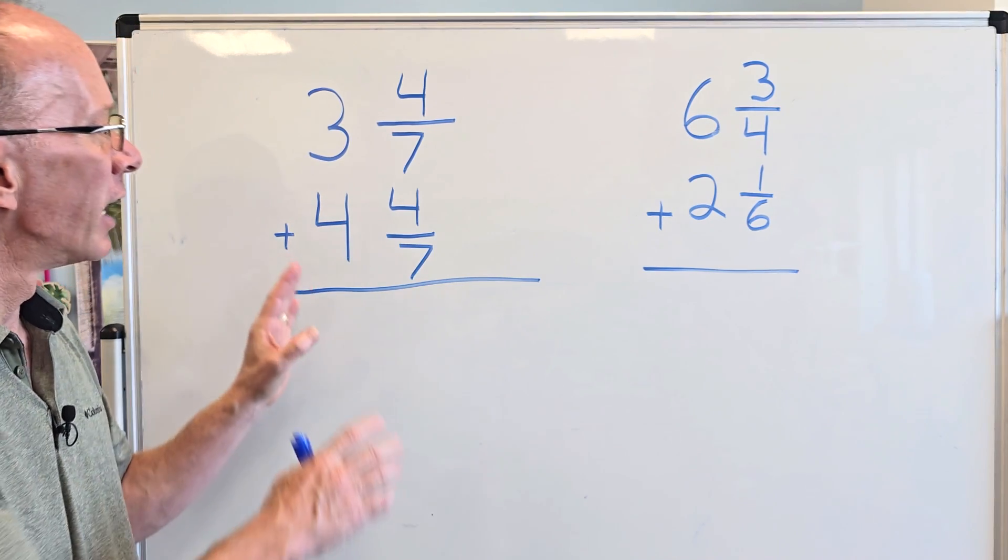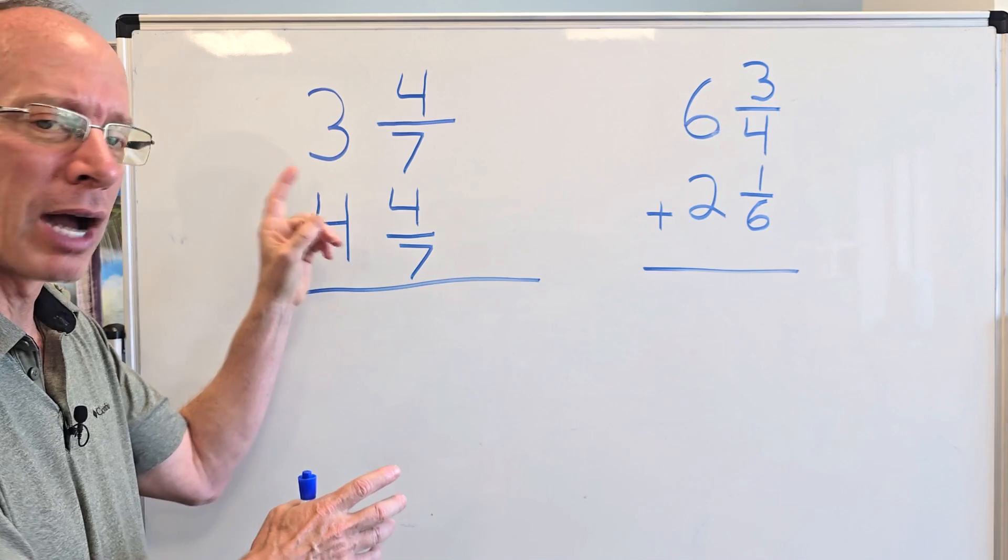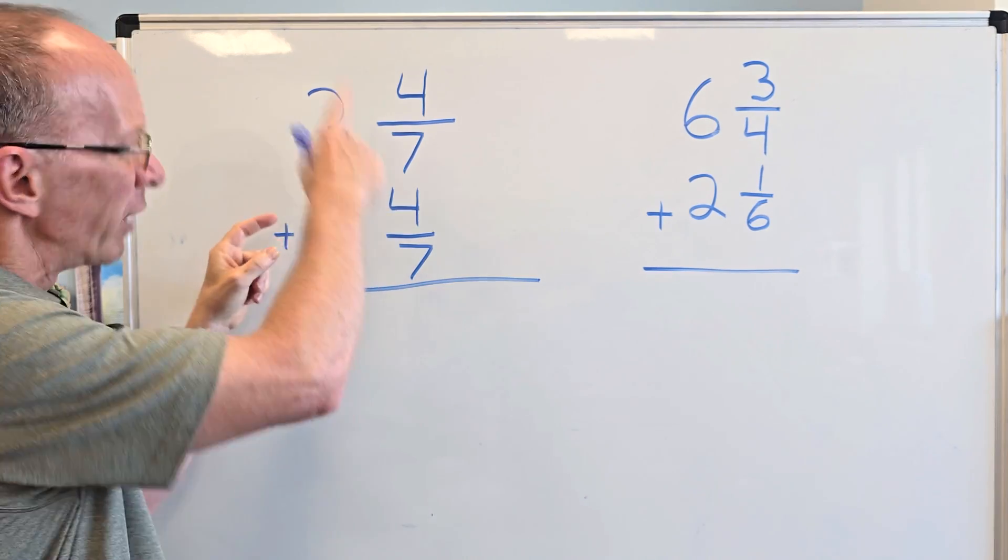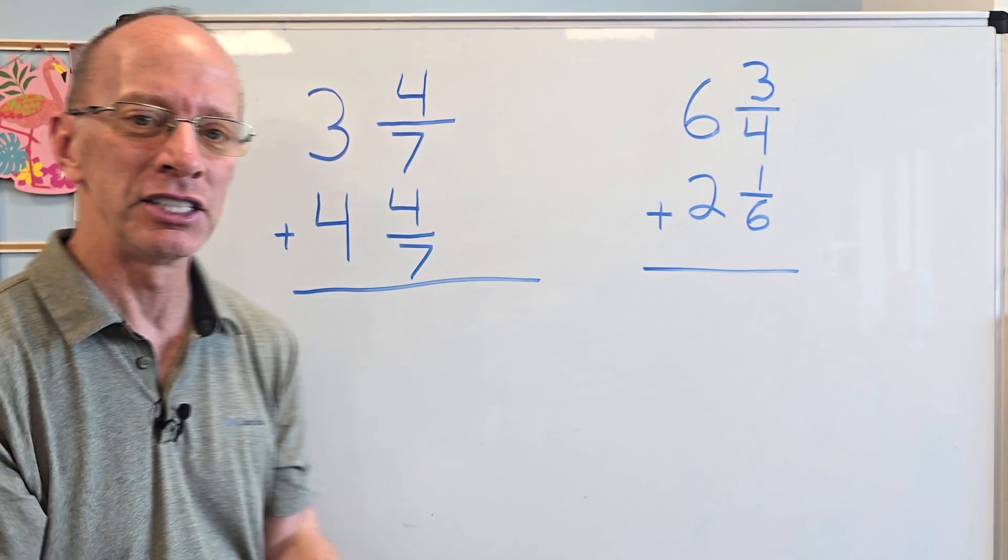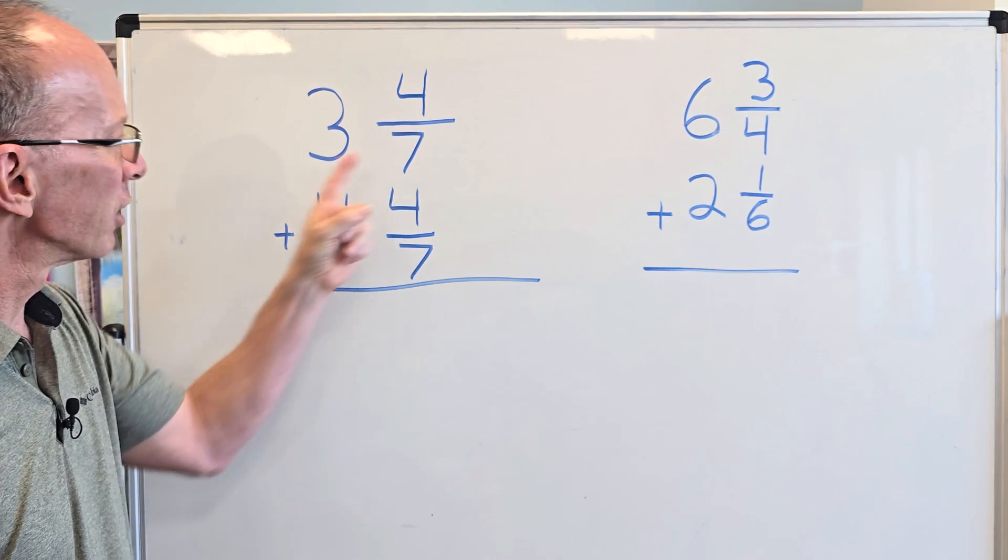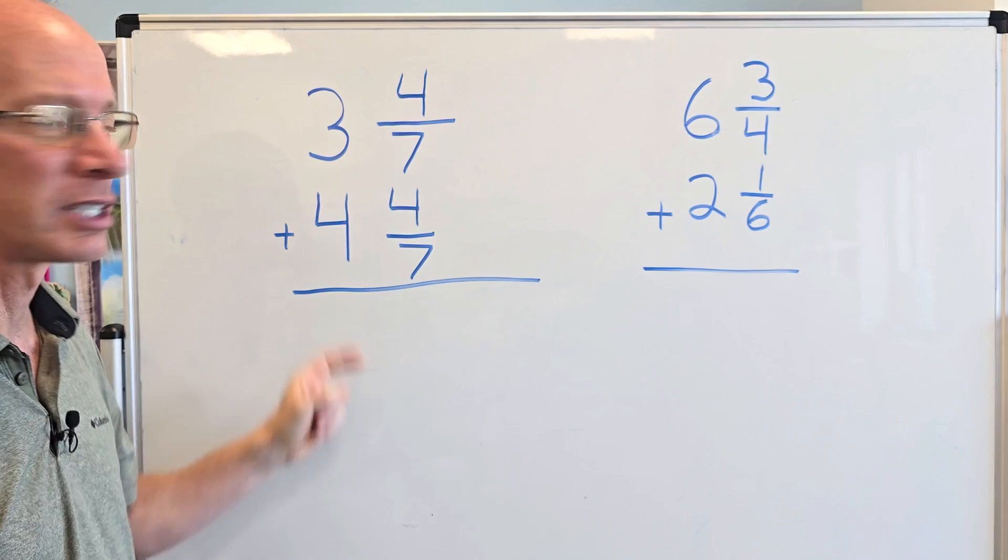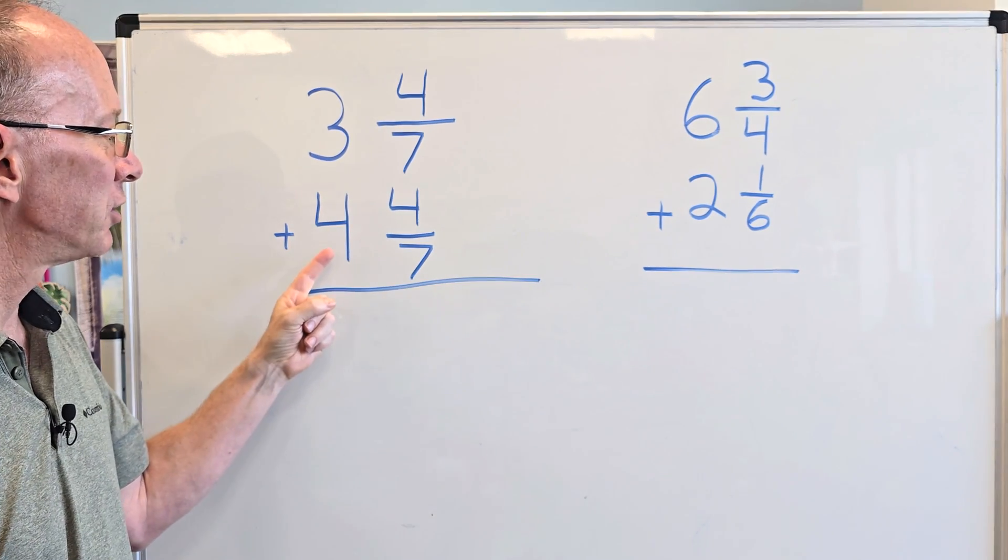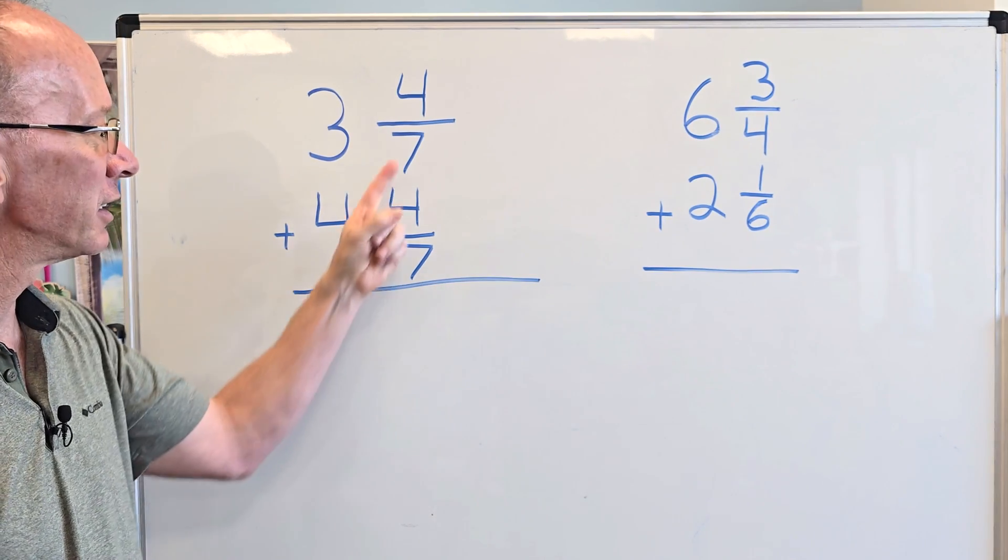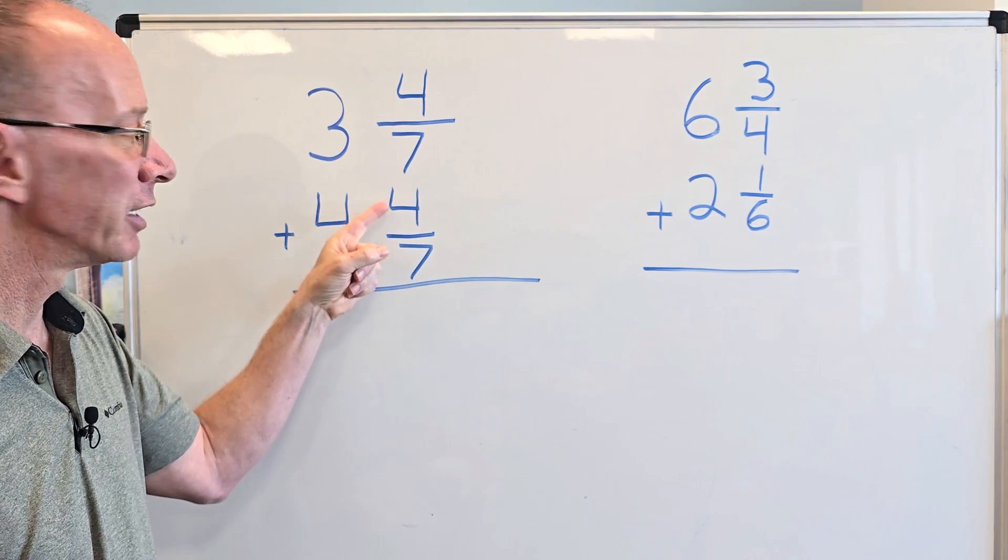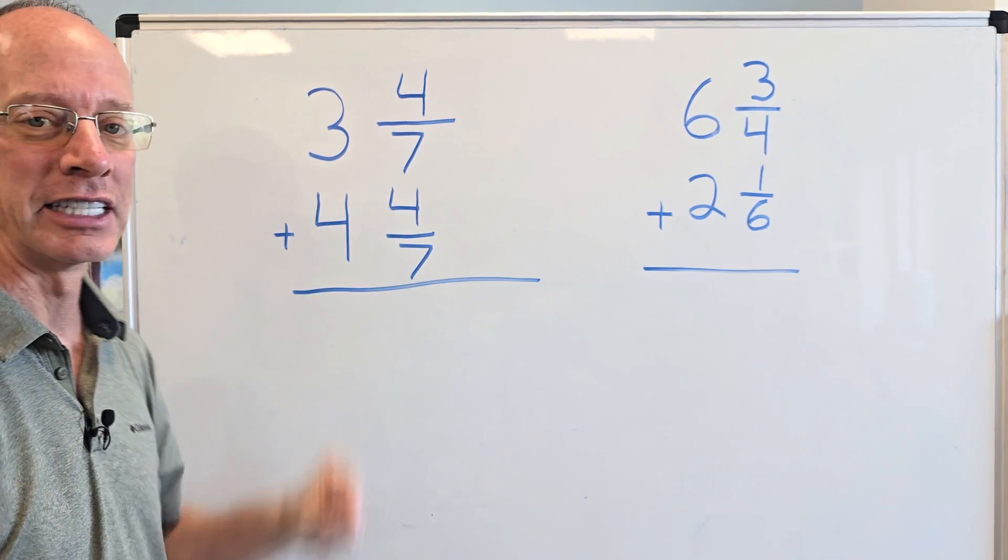Easy, cheesy, lemon squeezy. I always like to set up my problems. If it's kind of going up and down, it just makes it a lot easier for me to work with. I'm taking a look at this. I have 3 and 4 sevenths plus 4 and 4 sevenths. This is your whole number right here. This is your fraction. Right here is your numerator, and that's your denominator.